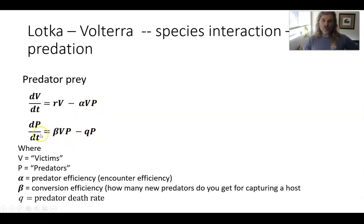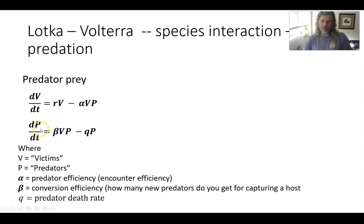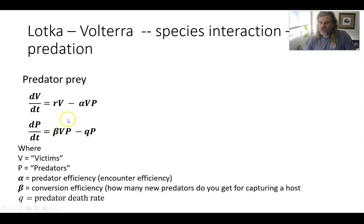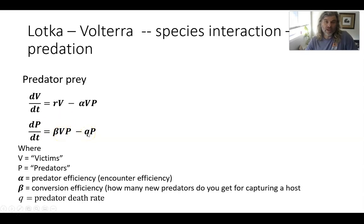The growth of the predators — the predator population dynamics — is very similar to exponential growth, just written a bit differently because it's dependent on the prey. And then there's a mortality term for the predators as well. You have to have that.